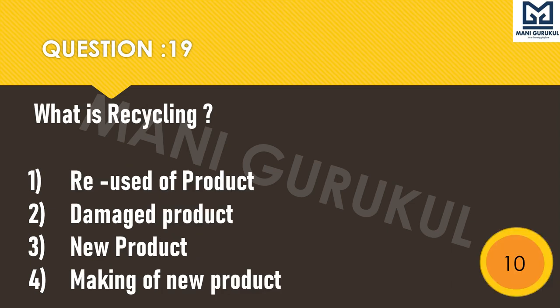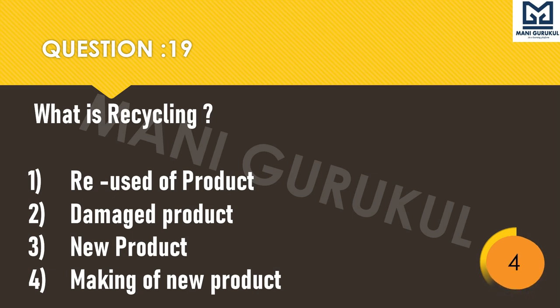Question 19: What is recycling? First: reuse of product. Second: damaged product. Third: making of a new product from something. Fourth: making of new product. Your time starts. Reused of product, damaged product, new product, or making of new product. Time's up.